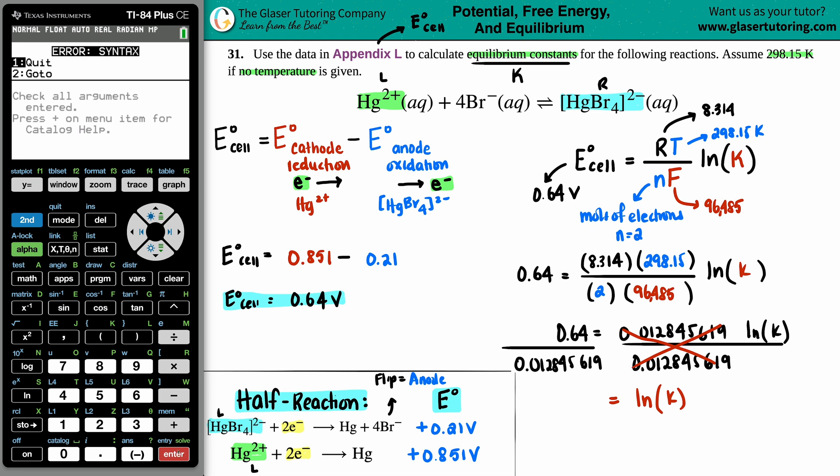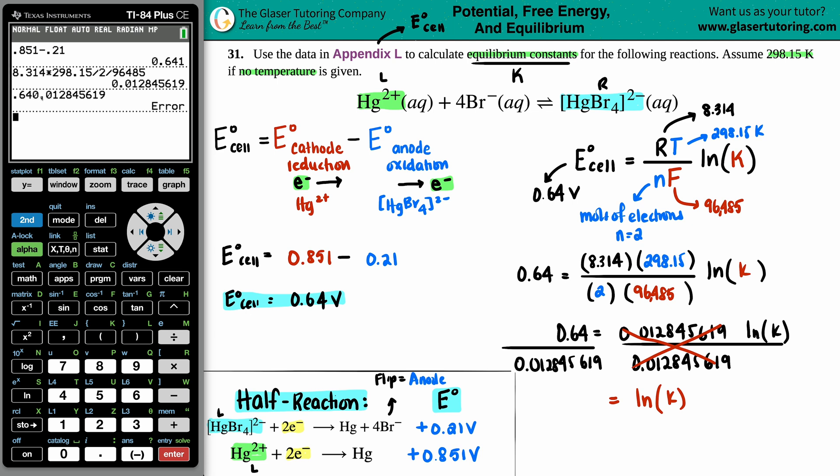Syntax error. Oh boy. What did I do? Oops. I did the decimal instead of the division. That was my mistake. 0.64 divided by, I go up here again. I try one more time and there we go. So once again, I am not going to round this number. So this will be 49.82243363.